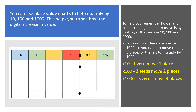To help us remember how many places we need to move on the place value chart, we can look at the number of zeros. When we are multiplying by 10, we will move one place on the place value chart. When we are multiplying by 100, we will move two places. When we are multiplying by 1000, we will move three places on the place value chart.